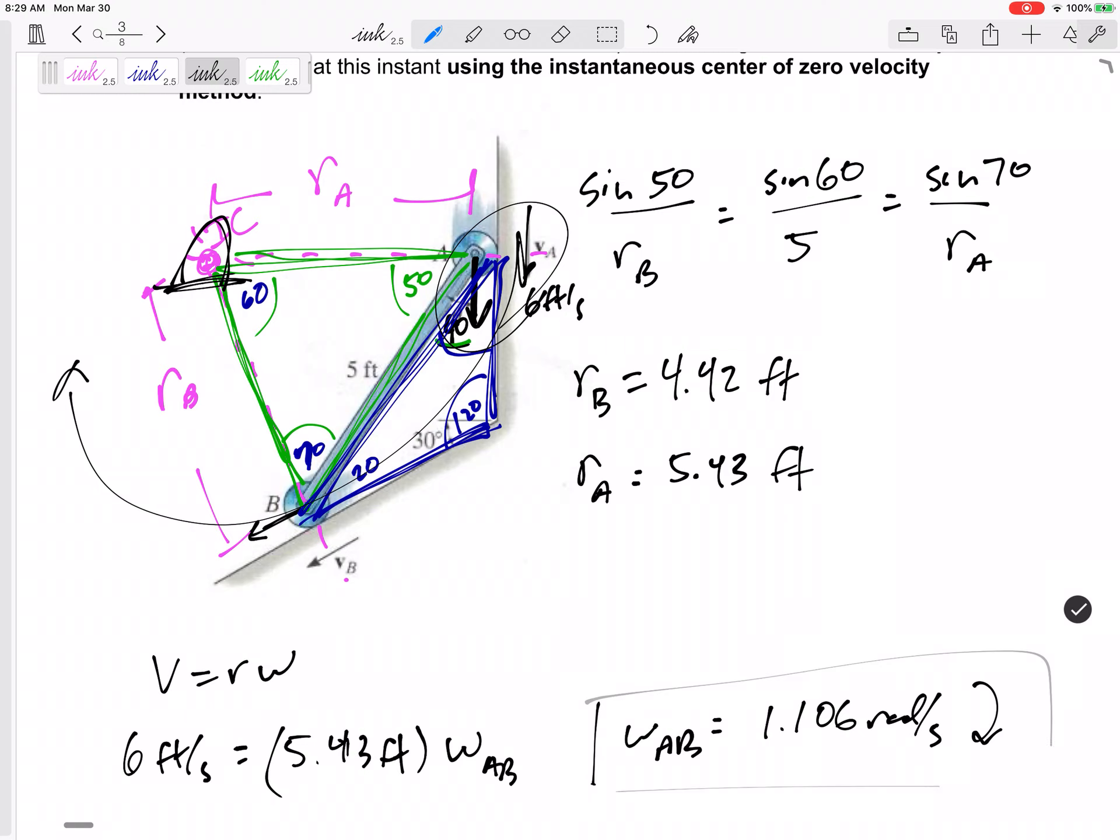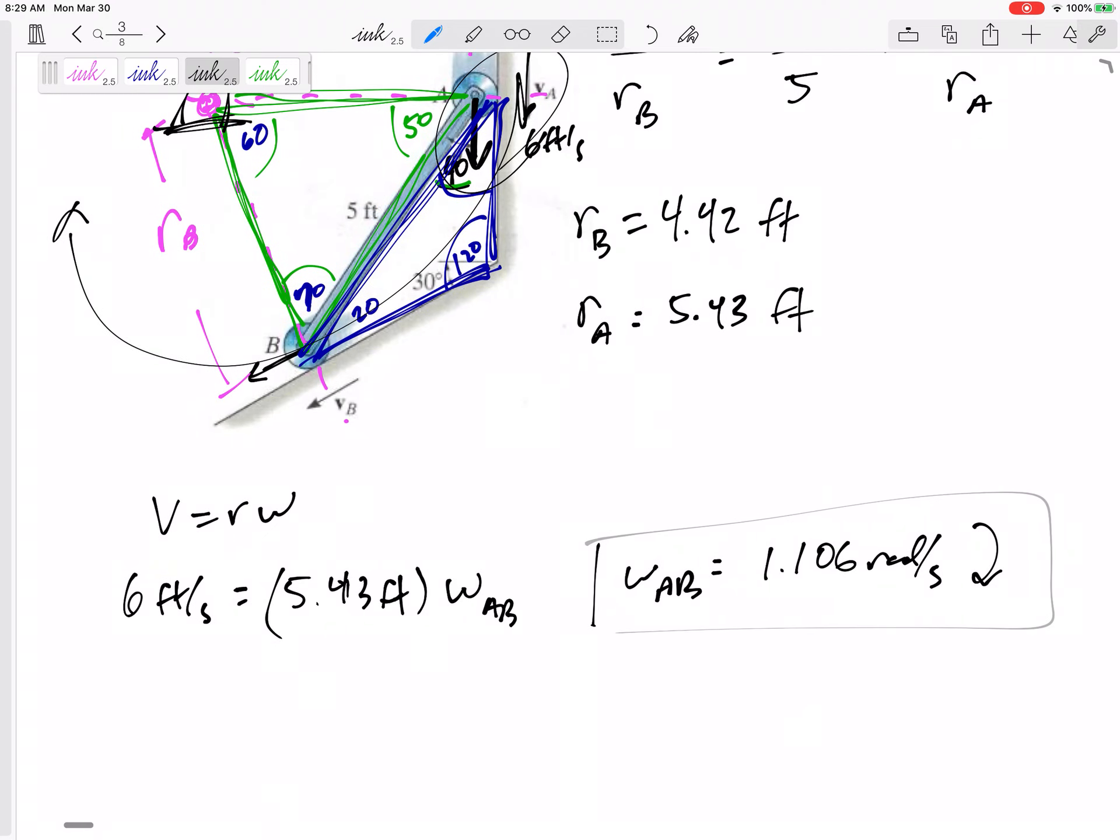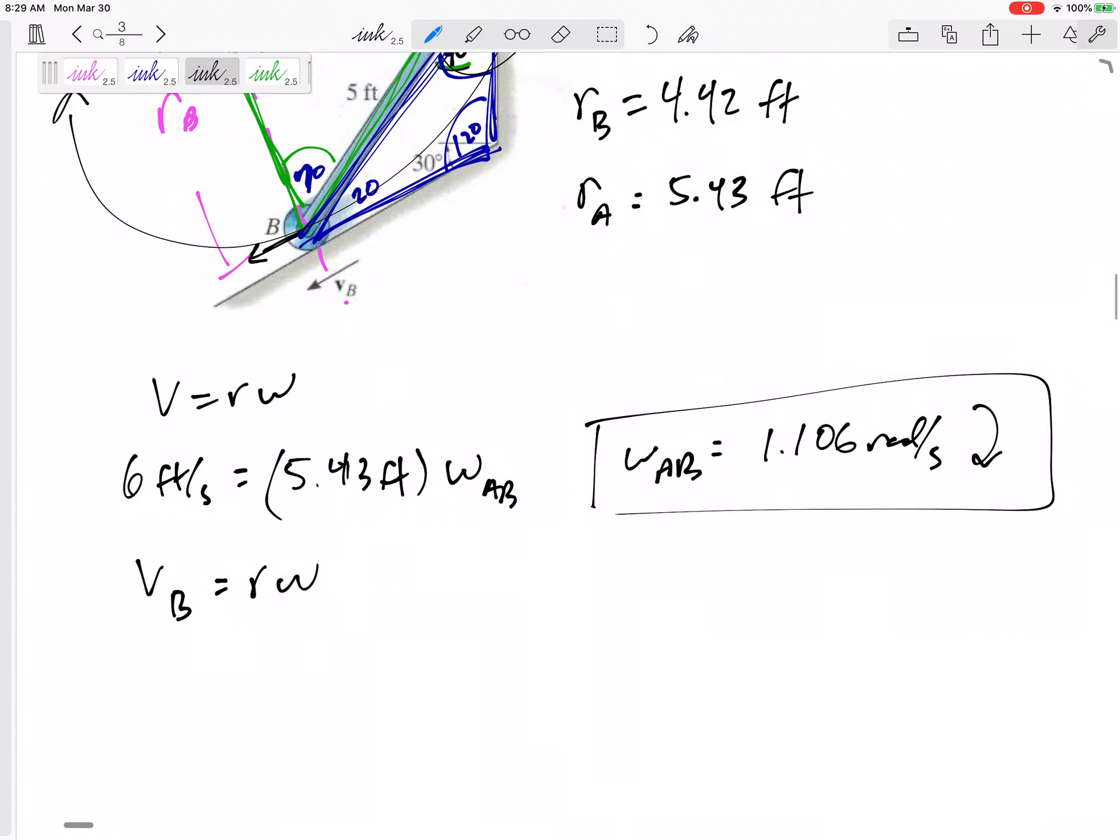Right here. Then, I'm going to use that, and I'm going to jump to VB equals R omega. VB equals its R, 4.42, times its omega, 1.106. 4.89 feet per second is the velocity of B. It's the velocity of B.